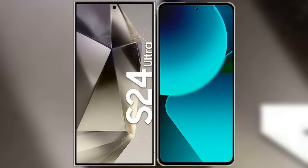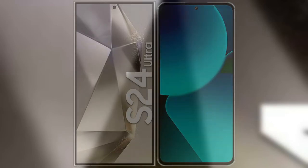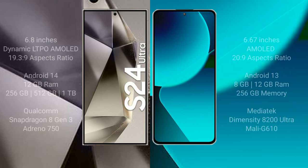I will compare the new Samsung Galaxy S24 Ultra with Xiaomi 13T. Samsung Galaxy S24 Ultra comes with a 6.8-inch Dynamic LTPO AMOLED Display and aspect ratio 19.3:9. Xiaomi 13T comes with a 6.67-inch AMOLED Display and aspect ratio 20:9.